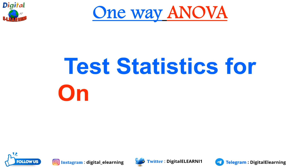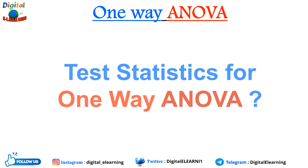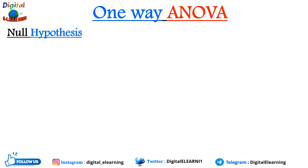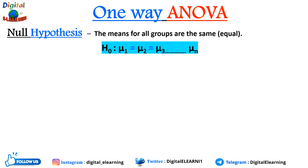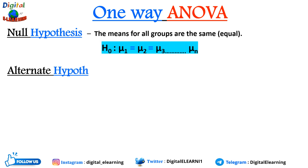Let us now look at the test statistics for one-way ANOVA. We'll start with the null hypothesis, which states that the mean for all the groups are the same or equal, irrespective of whether there are three, five, or seven groups. It is written as H0: μ1 = μ2 = μ3 ... = μn, where μ denotes the group mean and n denotes the number of groups. If there are three groups, then H0: μ1 = μ2 = μ3.